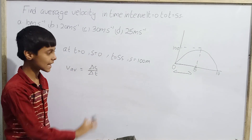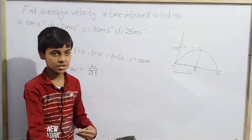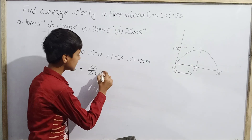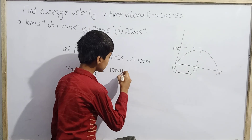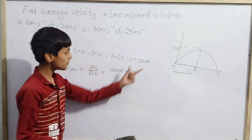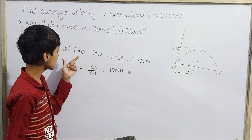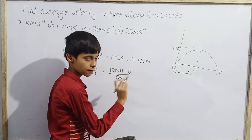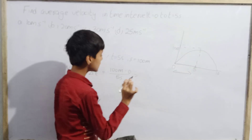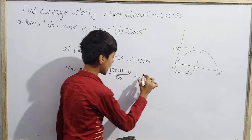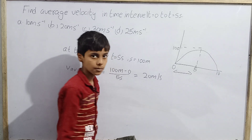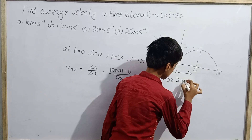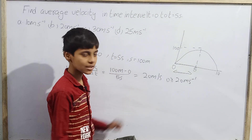Using the average velocity formula: average velocity = Δs / Δt = net displacement / total time. Net displacement = 100 − 0 = 100 meters. Total time = 5 seconds. So average velocity = 100 / 5 = 20 m/s.